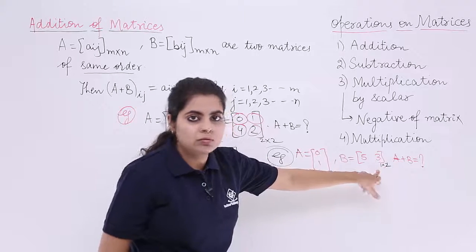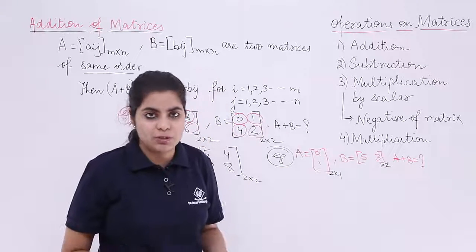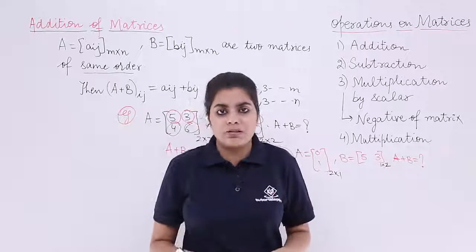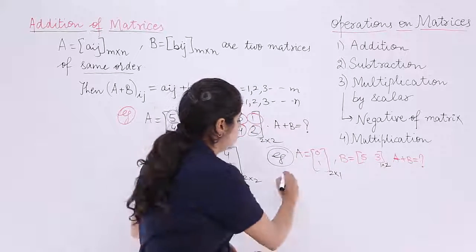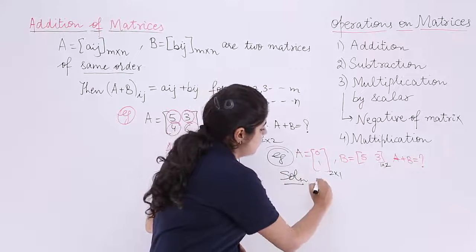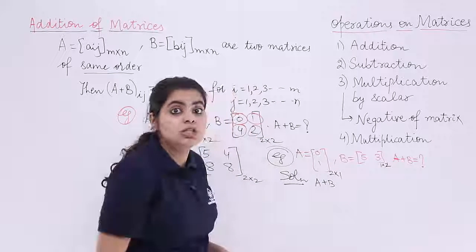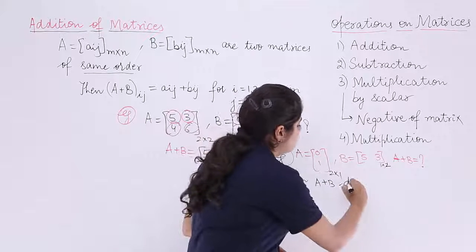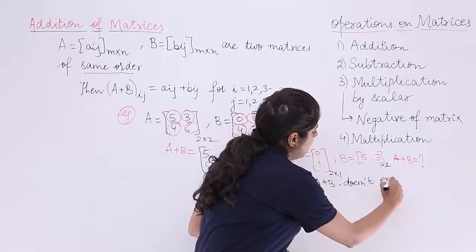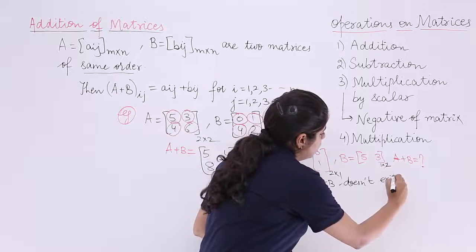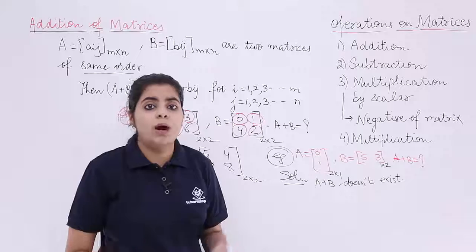the second case 1 row. They are not same. The number of rows are respectively not equal, the number of columns are respectively not equal. So the solution would be what? I would say A plus B does not exist. That means you cannot find the addition to get a resultant matrix. Why? Because the condition of the same order is not fulfilled.